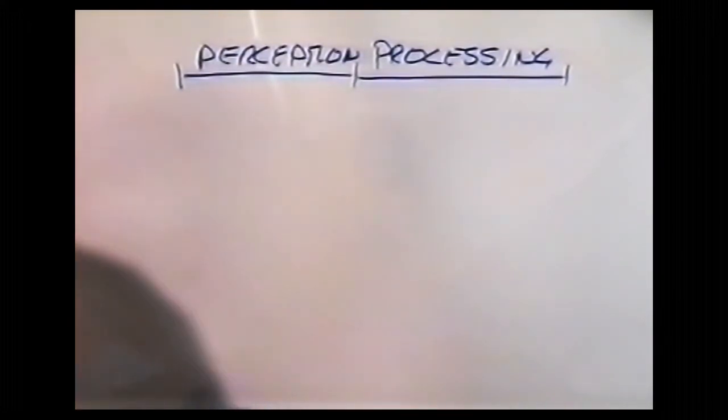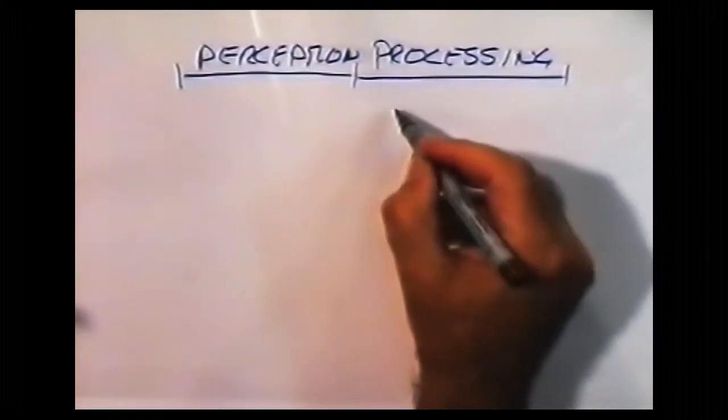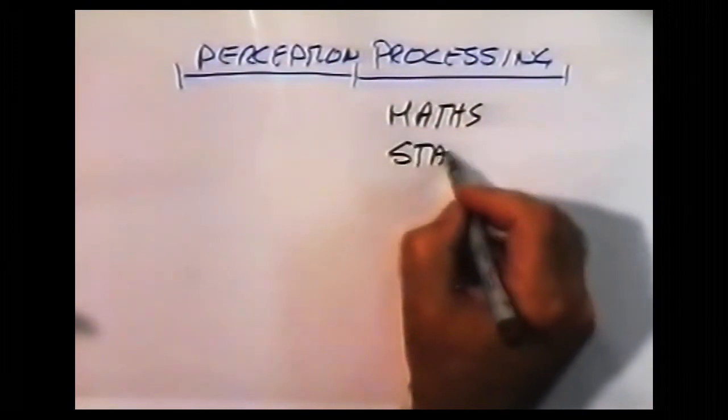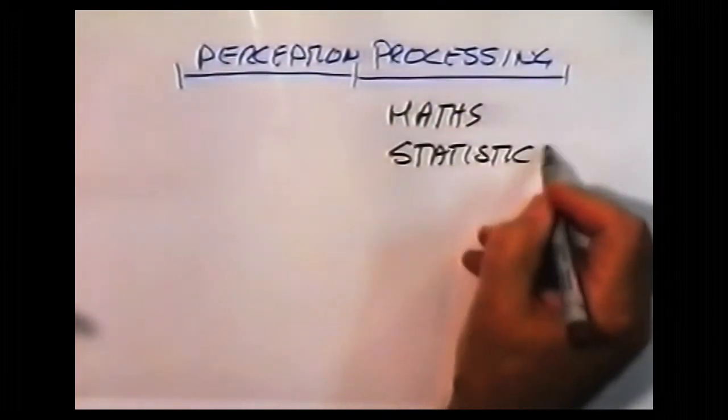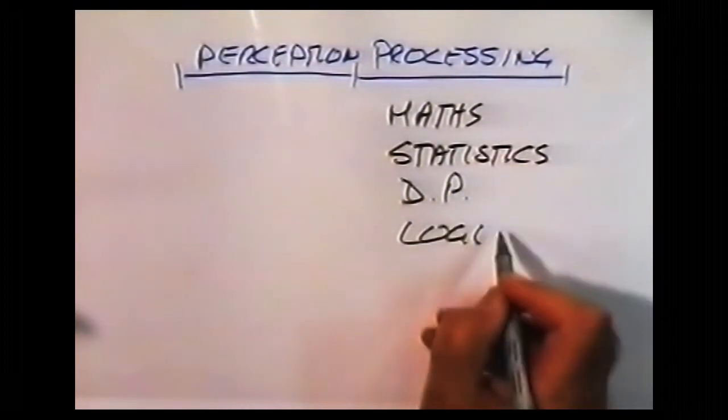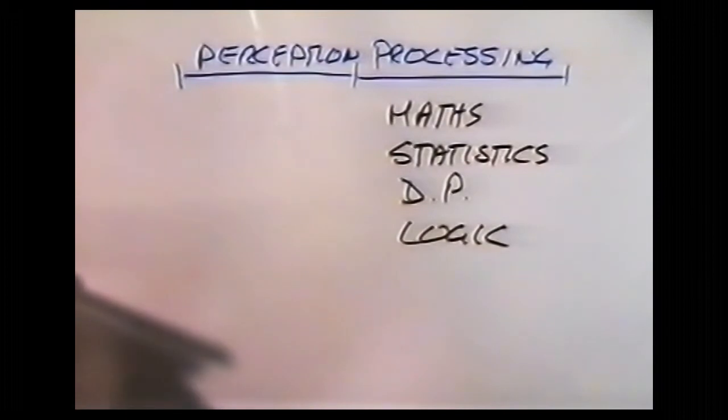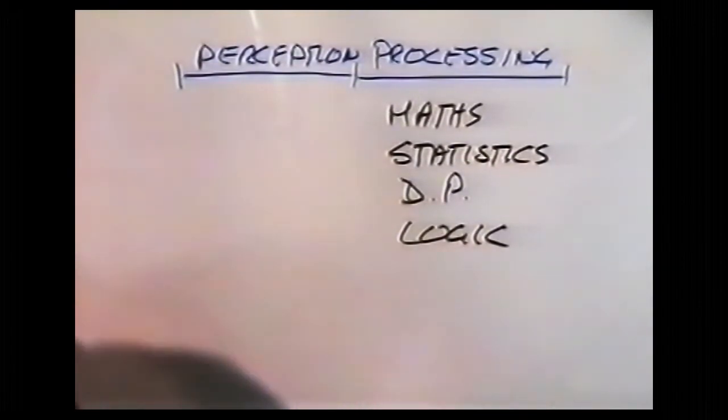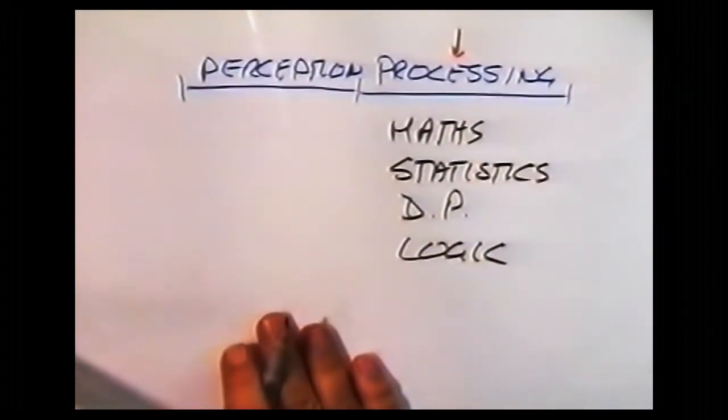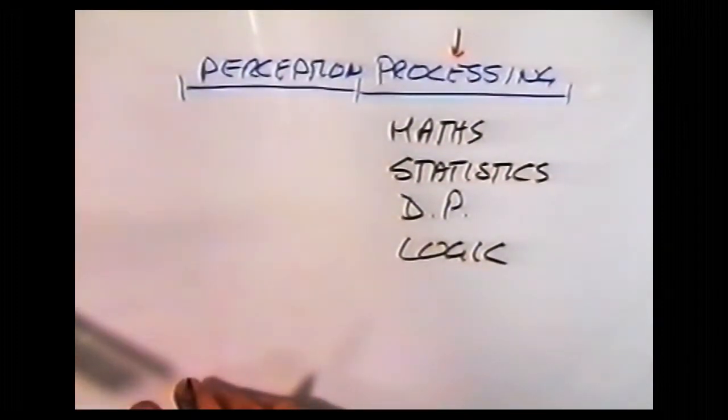Now, under processing, we have developed truly excellent systems of mathematics, statistics, computers, and data processing, and various forms of logic. These are excellent processing systems. And over the years, we have improved them all the time, getting better and better processing systems.